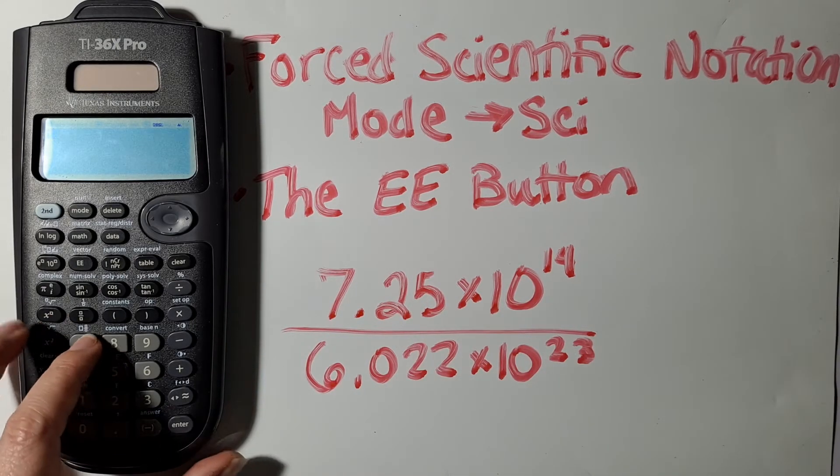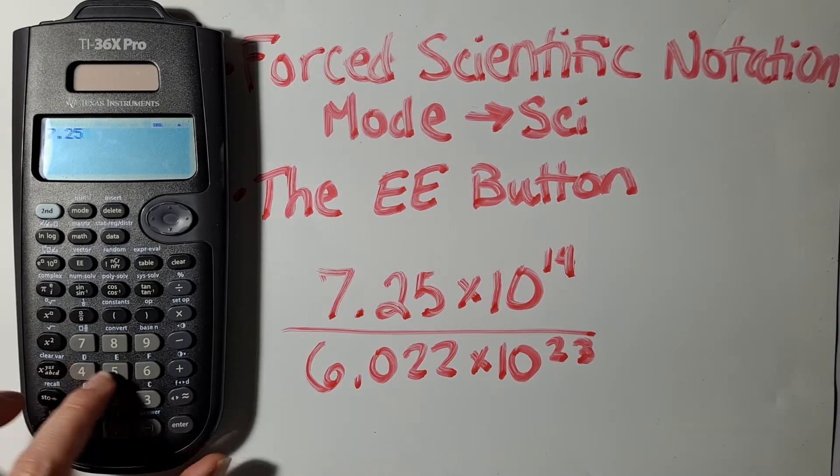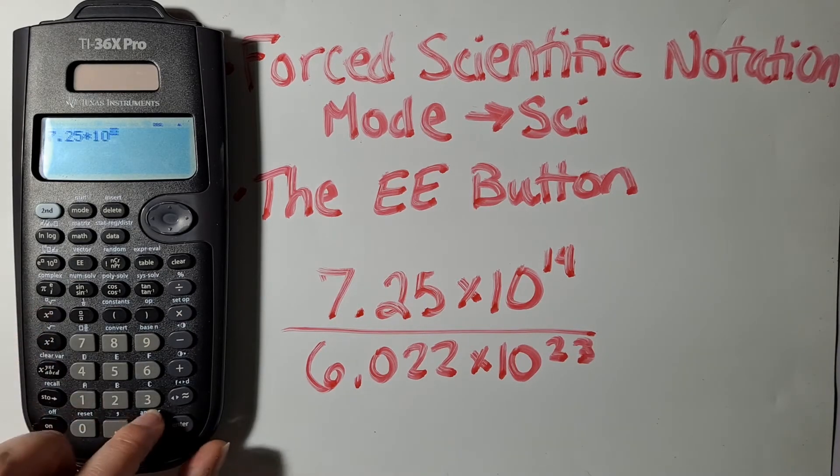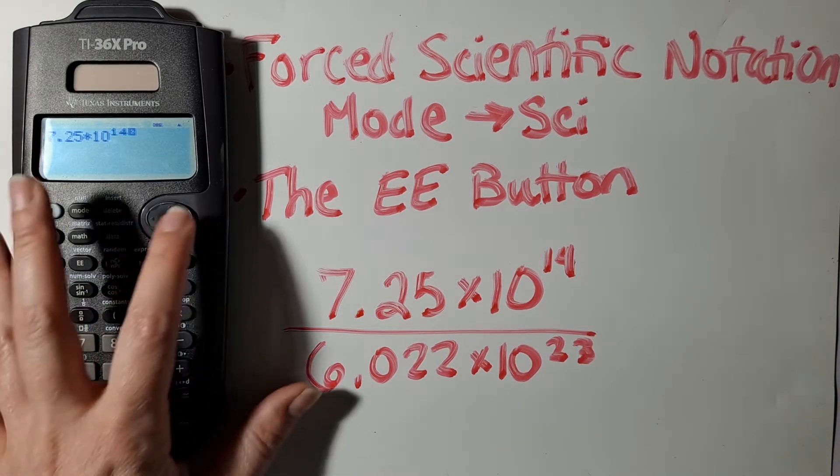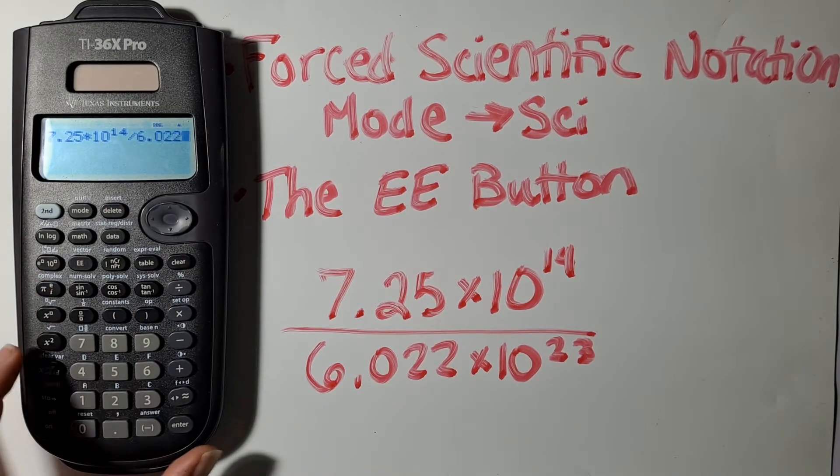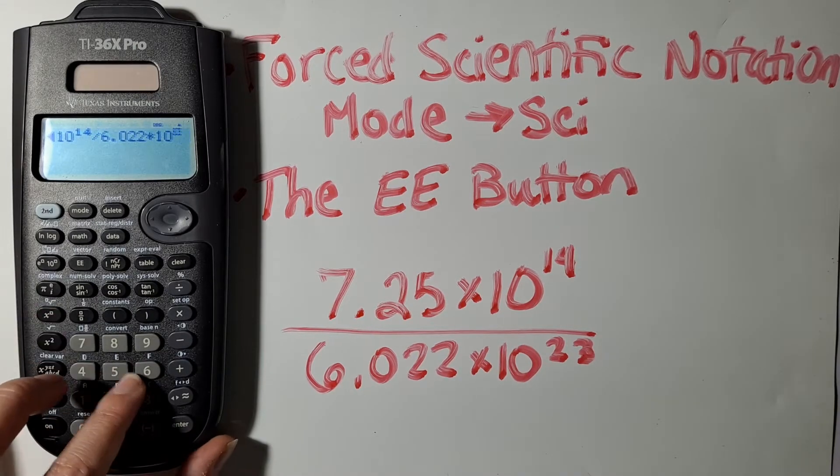So if you just type in this problem as written, 7.25, and then you can type in times 10 to the 14th, and then you can go divided by 6.022 times 10 to the 23.